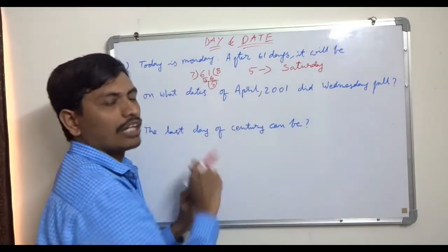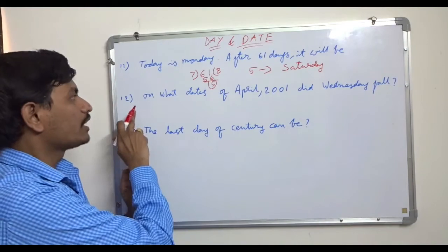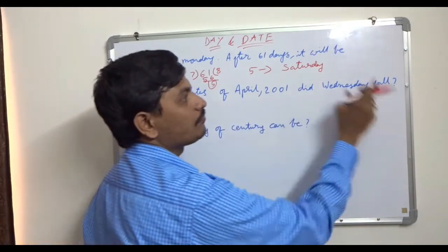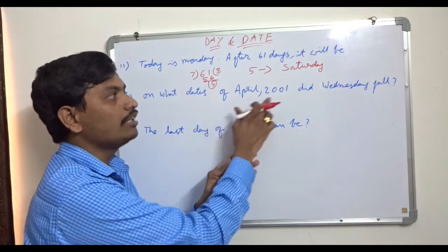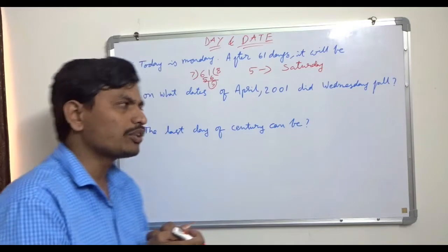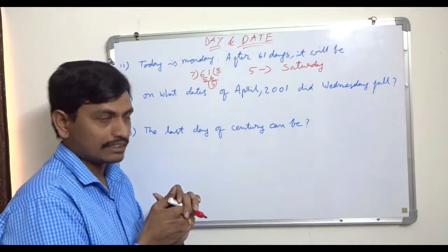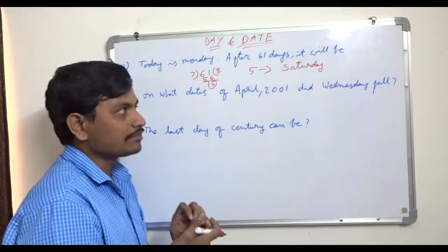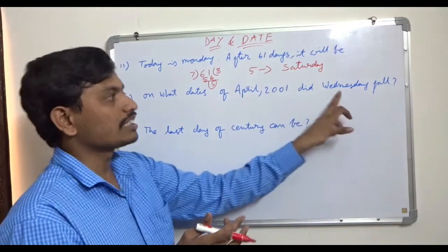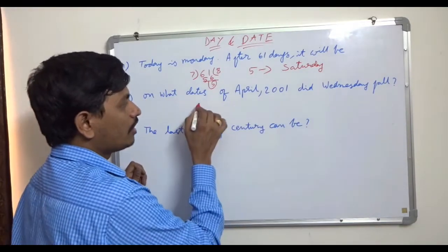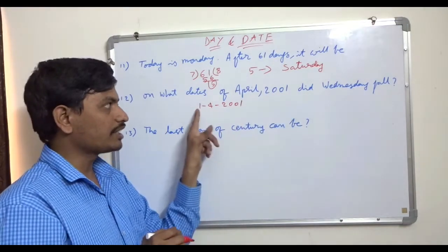Now let us see problem 12. On what dates of April 2001 did Wednesday fall? You may get questions like this in exams. We know every month has four weeks, so we may have four or five of each day depending on the month. For a 31-day month, three days can occur five times. First, we find what day April 1st, 2001 falls on.